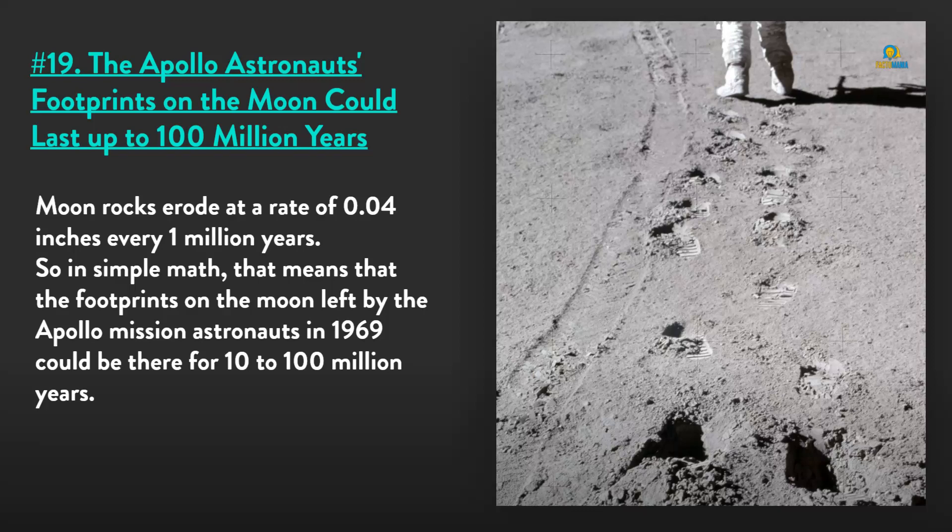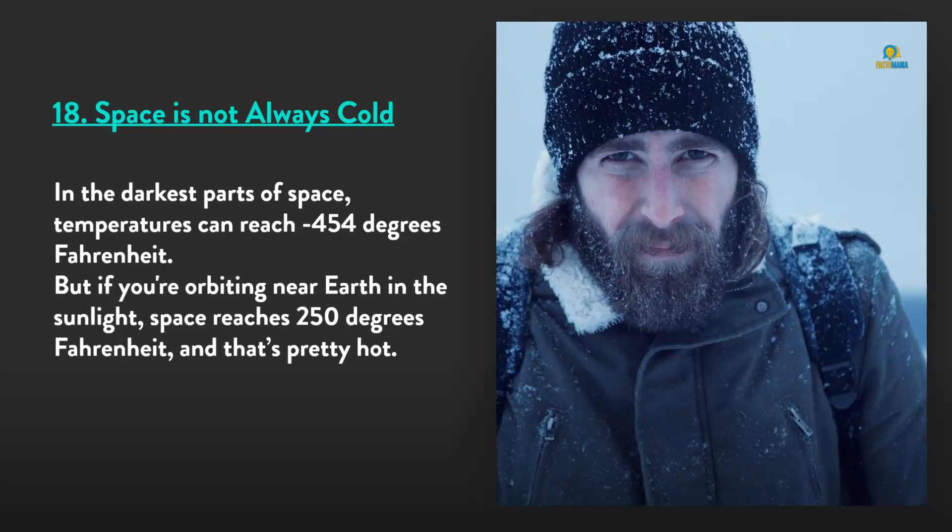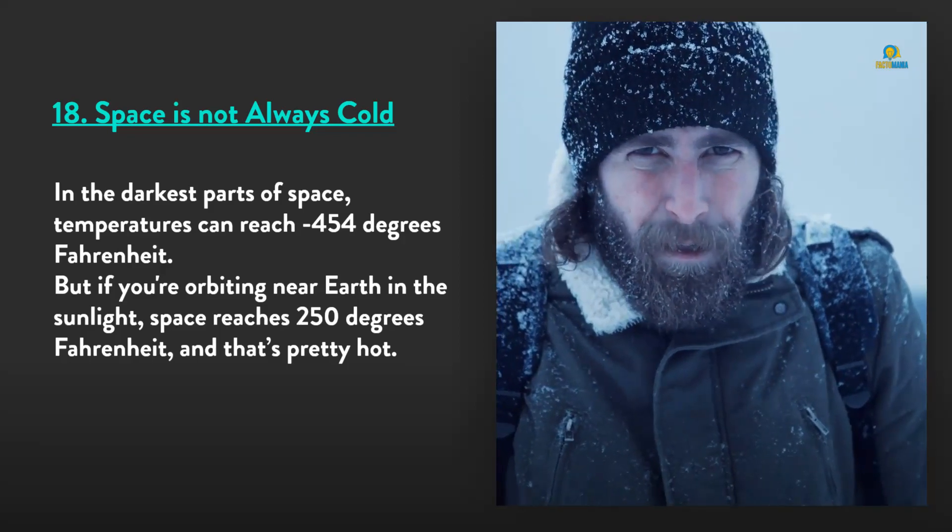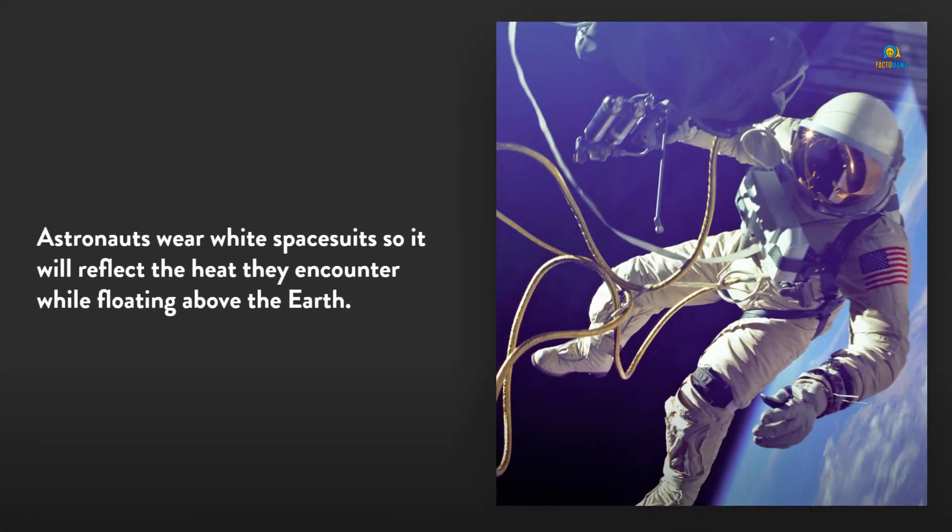Number 18: Space is not always cold. In the darkest parts of space, temperatures can reach minus 454 degrees Fahrenheit. But if you're orbiting near Earth in the sunlight, space reaches 250 degrees Fahrenheit, and that's pretty hot. Astronauts wear white spacesuits to reflect the heat they encounter while floating above the Earth.